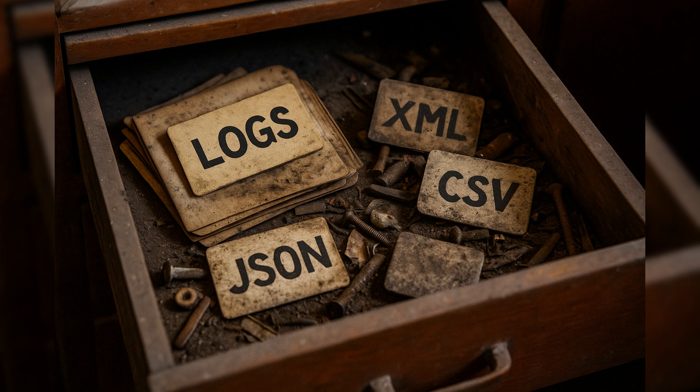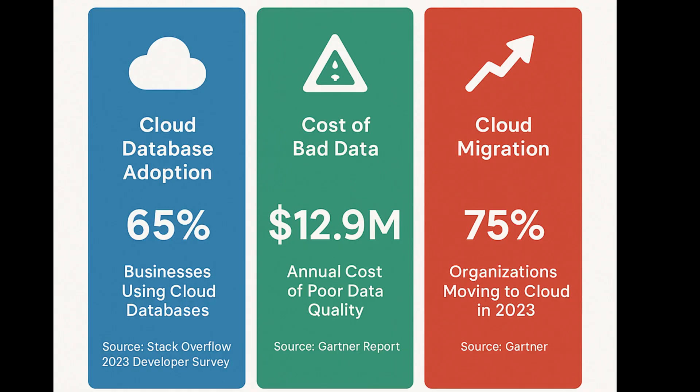Let's hit pause for a second. You can have the fastest processing tools known to man and the most scalable storage solutions, but if your data isn't modeled correctly, you have just built your first digital junk drawer. You start running into slow queries, duplicate logic, broken reports, and a whole lot of wasted time. Gartner estimates that poor data quality costs companies $12.9 million per year — that is what happens when modeling is treated as an afterthought.